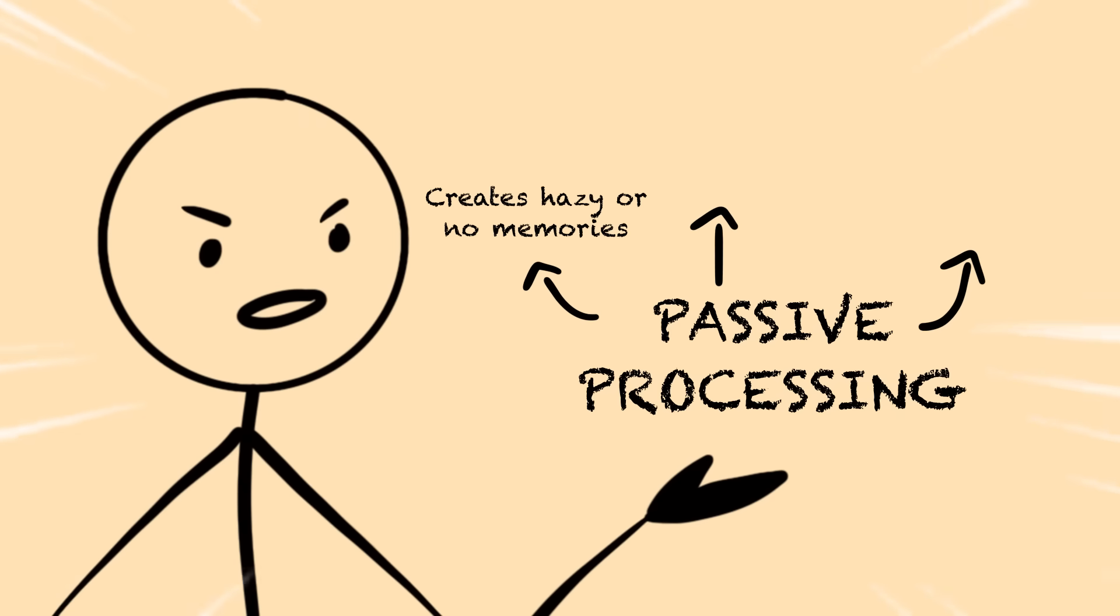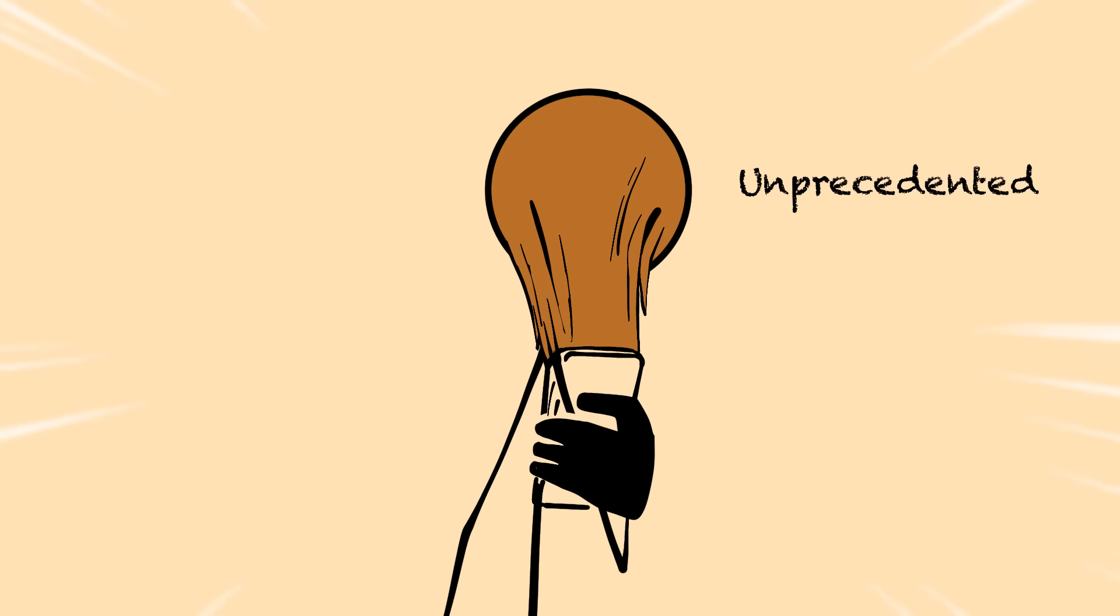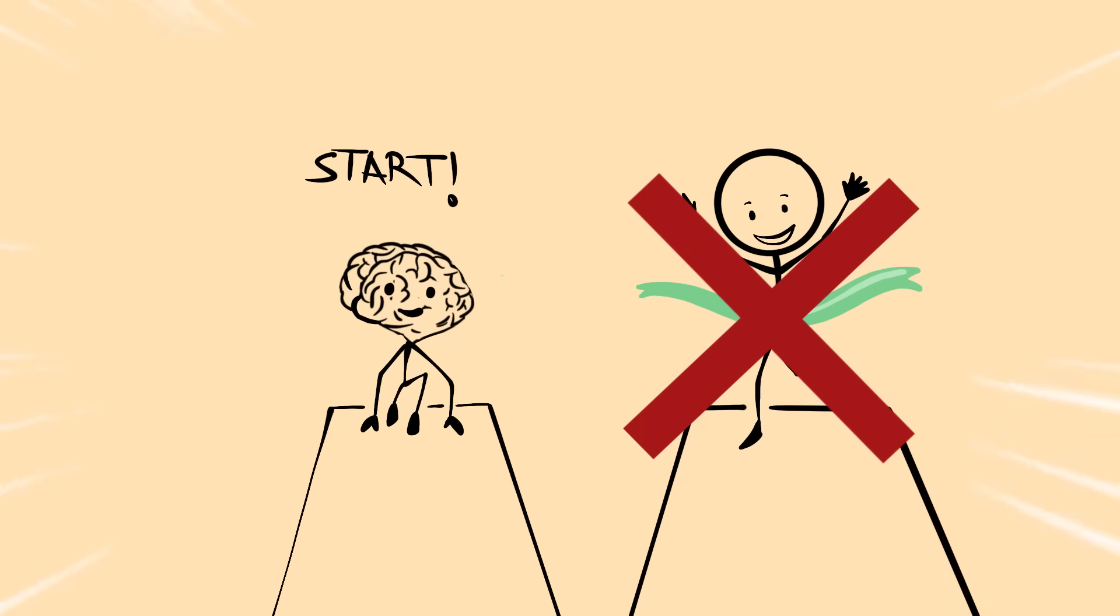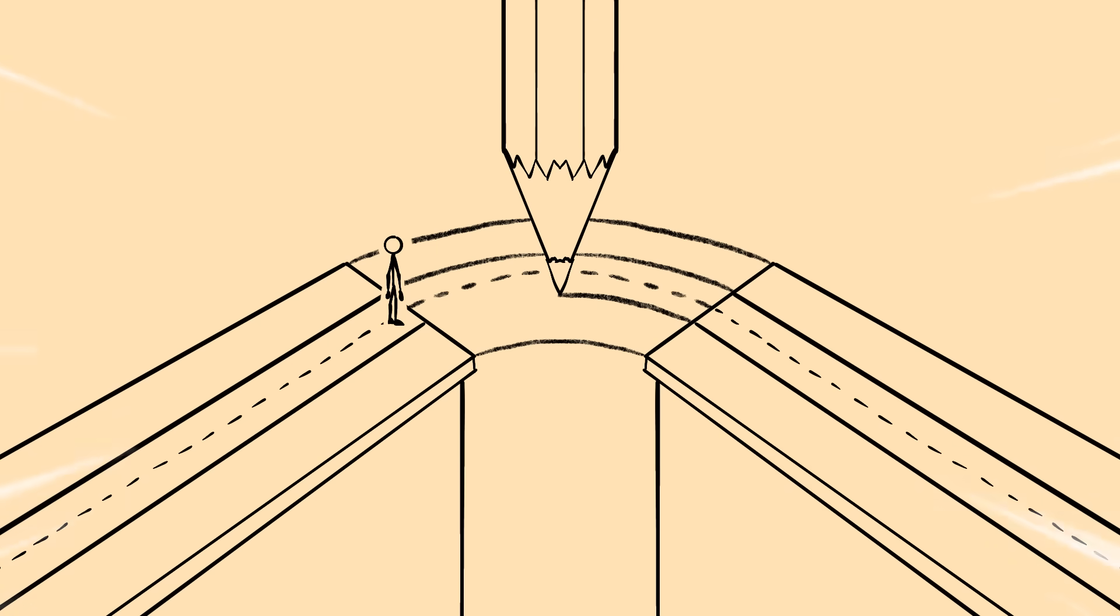Passive processing creates hazy or no memories, doesn't build lasting pathways, and makes time feel phantom. This is where phones have created something unprecedented. They've invented a third state—fragmented processing—where your brain is constantly starting but never finishing its natural memory creation cycle.